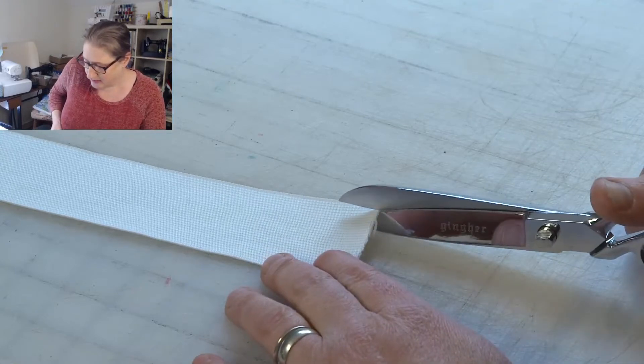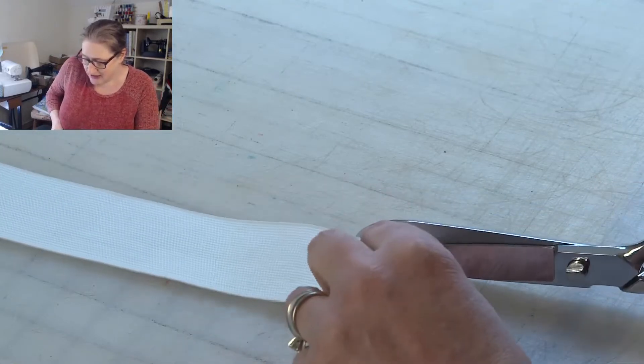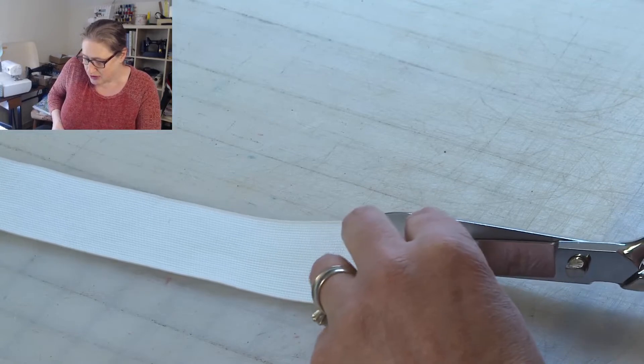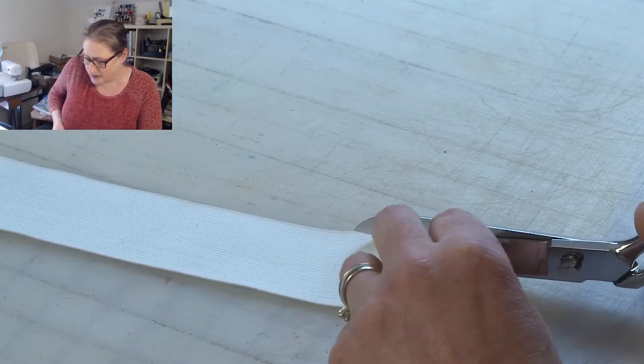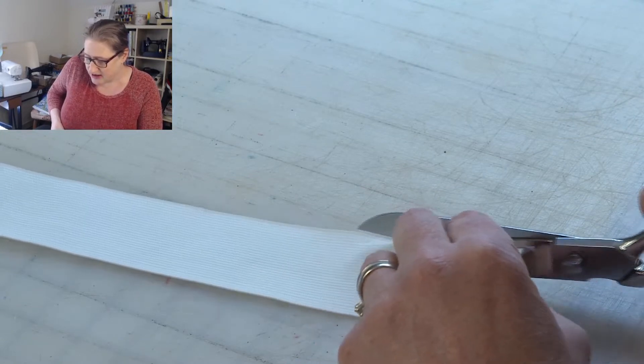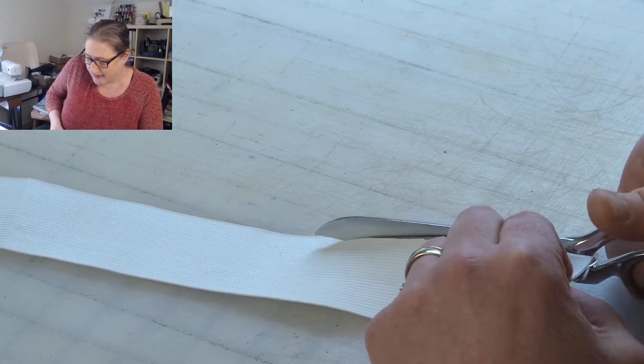it along a rib and you stay between those two ridges, the elastic is not going to fray. I want to show you what happens.